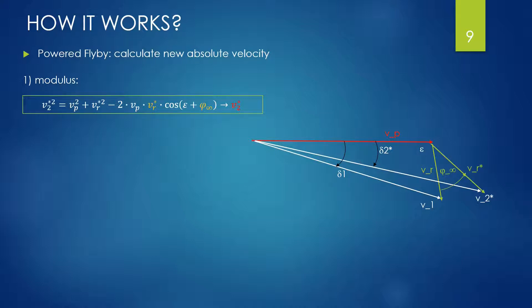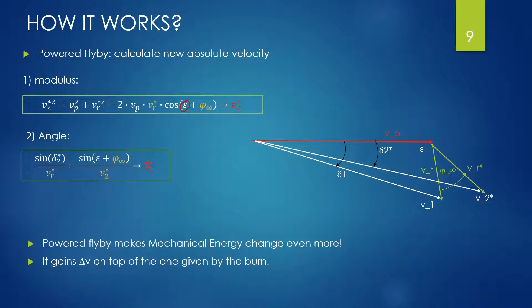For the modulus, we use the cosine theorem as for the unpowered flyby. The angle epsilon does not change. The new parameters phi and VR star we found right away. Same history for the angle delta2 star, always the sine theorem but with the three new entries: phi-infinite, VR star calculated in the previous slide, and V2 star found right above. As we can see from the vector chart, the relative velocity is also changing, and the absolute velocity is changing even more. The result is that the kinetic energy gained by the probe with the powered flyby is more than the one simply given by the burn.